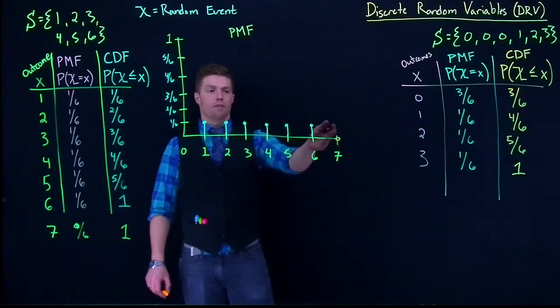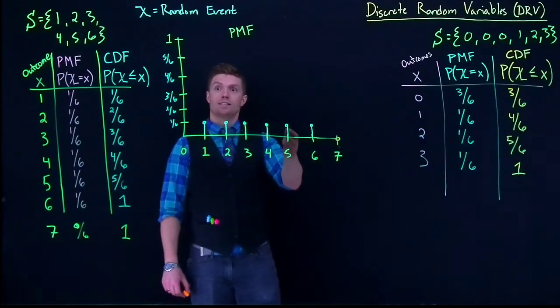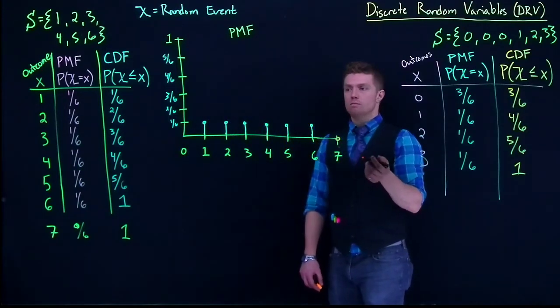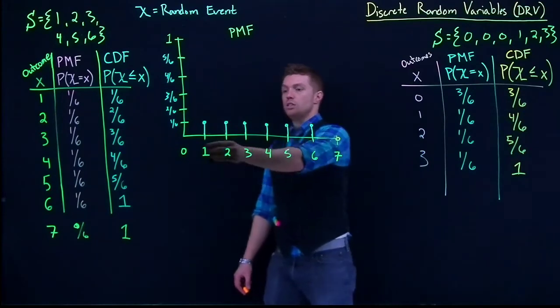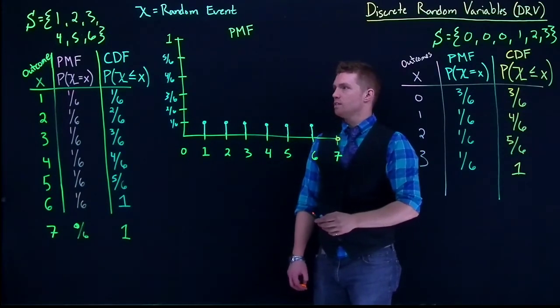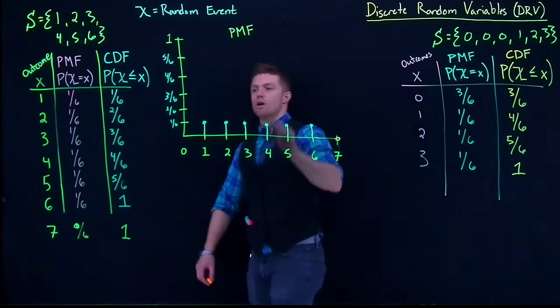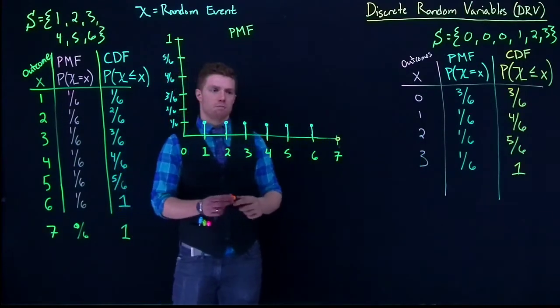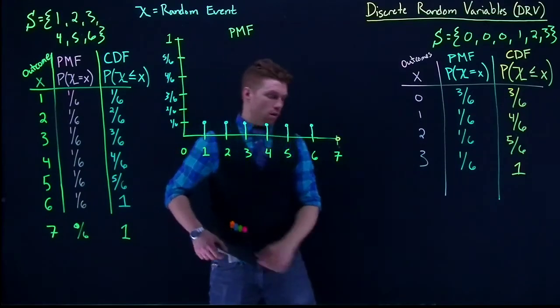What is interesting about this one is that this distribution actually has a name and it's called uniformly distributed. Why? Well, because each of the outcomes have the exact same probability of success. So that's how we would draw our PMF.